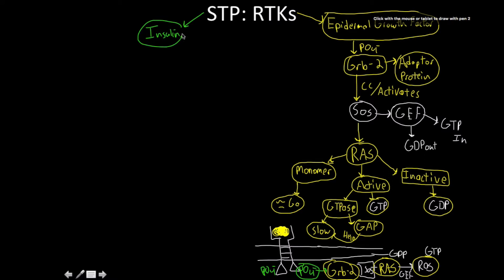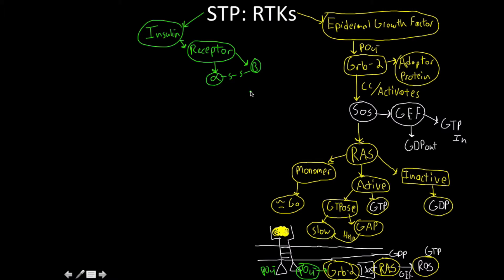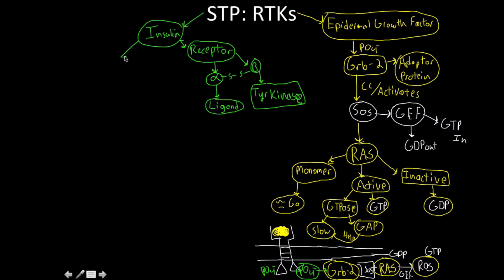Now let's move on to insulin. The insulin receptor is unique: it consists of an alpha subunit and a beta subunit connected by a disulfide bridge, which is unusual for membrane-bound receptors. The alpha subunit is the site of ligand binding, while the beta subunit is the actual tyrosine kinase. Ligand binding causes dimerization, which results in cross-phosphorylation of the tyrosine domains and activation.